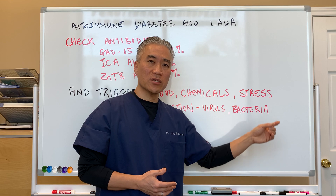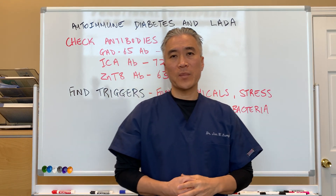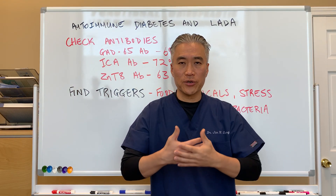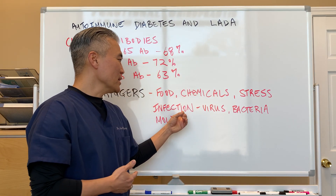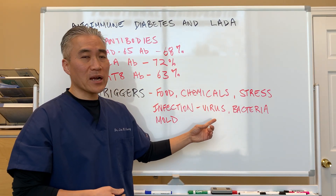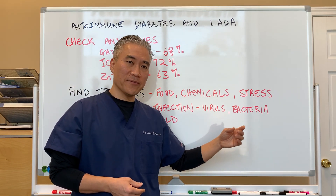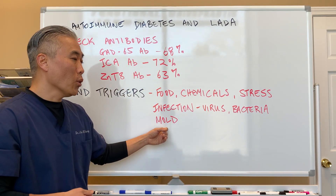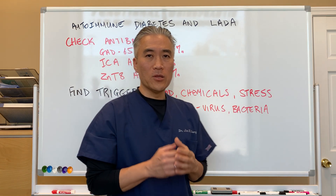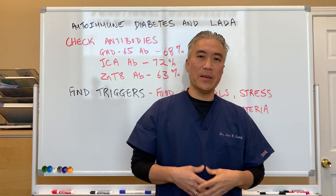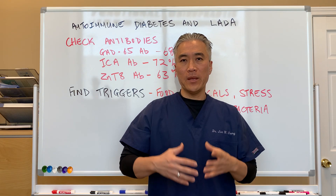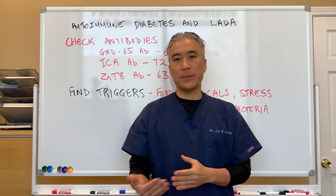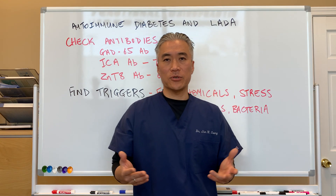Stress is a very important factor — stress in itself can trigger autoimmune disease. Infection is another trigger: viruses, bacterial infections, and mold all need to be considered. Knowing the environmental triggers and what type of infection a patient may have is crucial in helping patients who have autoimmune diabetes. Without identifying these triggers, it is very difficult to treat.